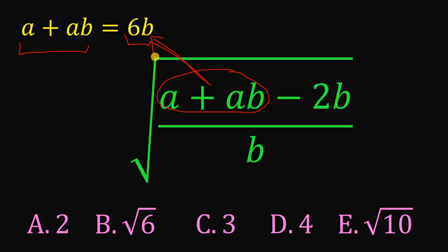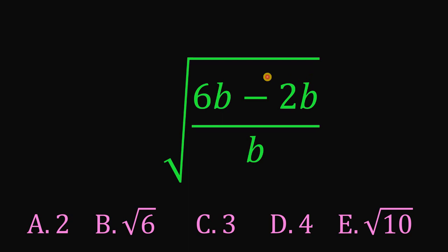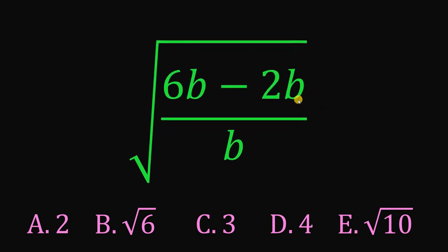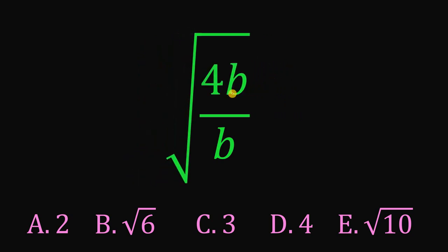So, we can replace this as 6b, like this. And 6b minus 2b, this will give us 4b. And we can now cancel out b on the numerator and b on the denominator.